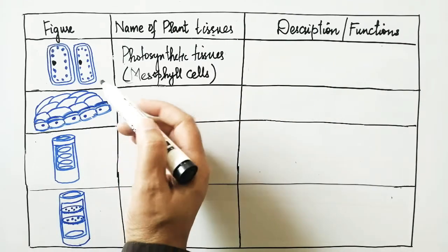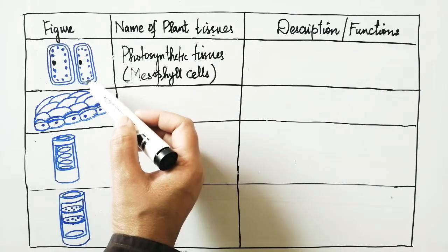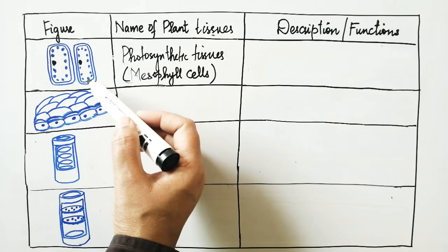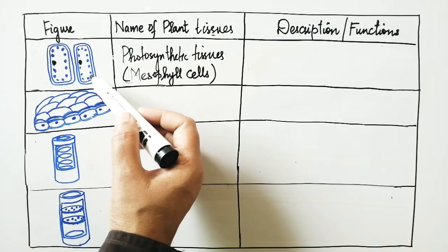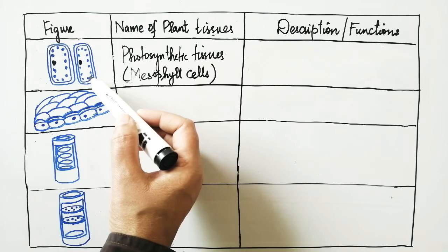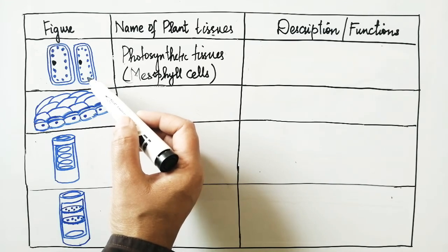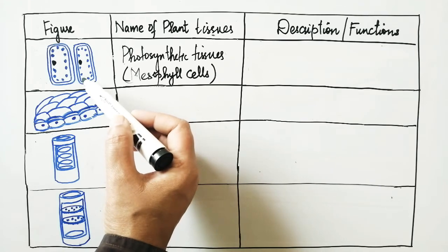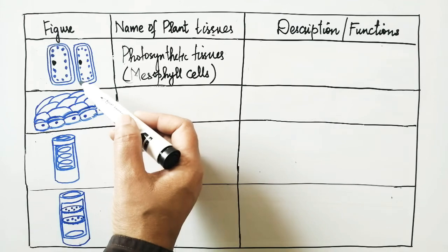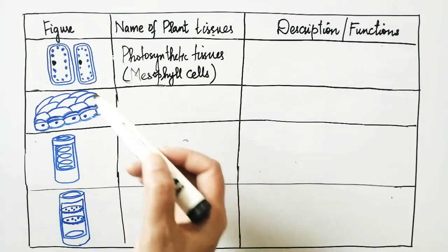You can also observe some of the dotted structures inside of this cell. These dotted structures represent chloroplasts which contain the green colored pigment chlorophyll. And basically, these structures or these plant tissues are present in the leaves. So, leaves have lots of photosynthetic tissues in order to carry out photosynthesis.